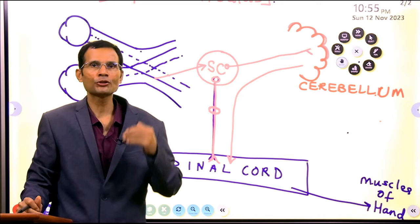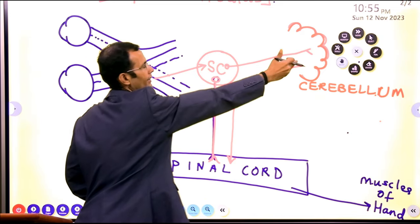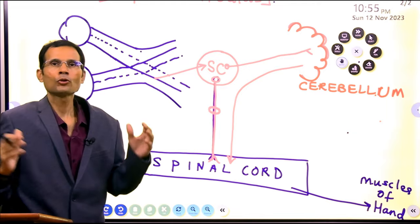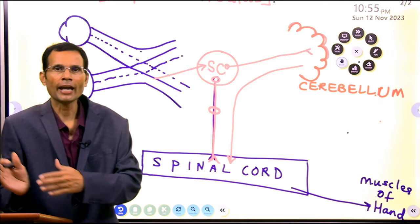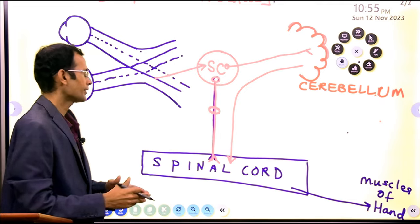So cerebellum has received those visual inputs. Now based on this, cerebellum is going to take the action, coordination between hand muscles and perform those actions of hitting fours and sixes.